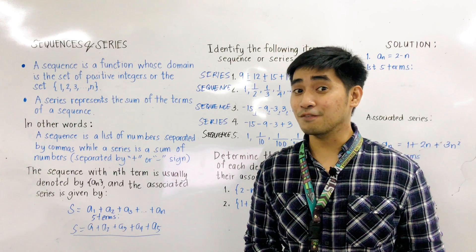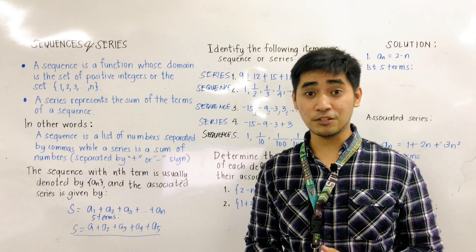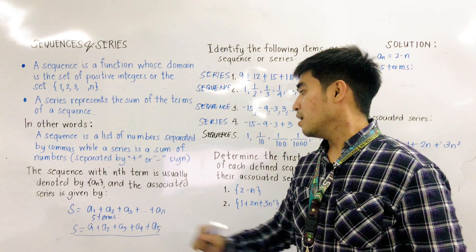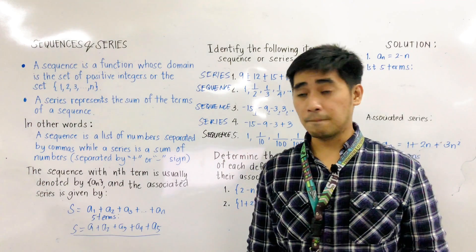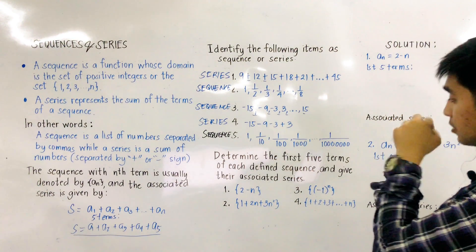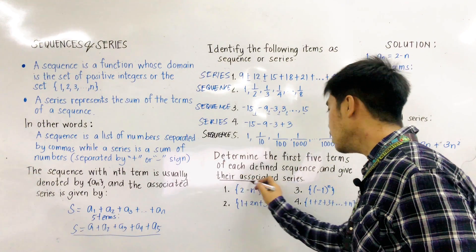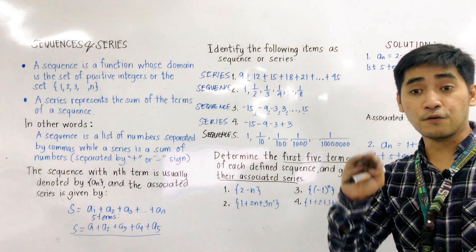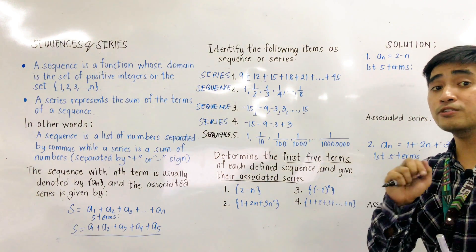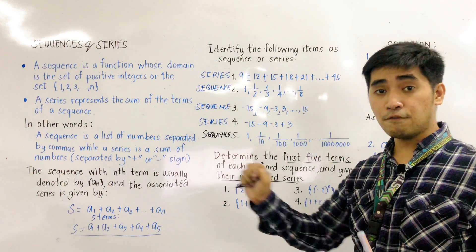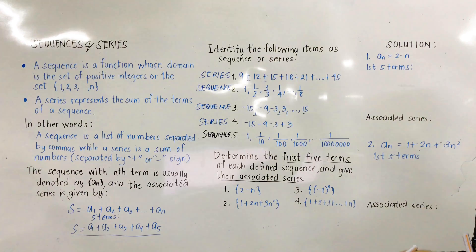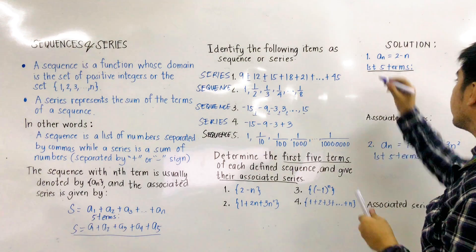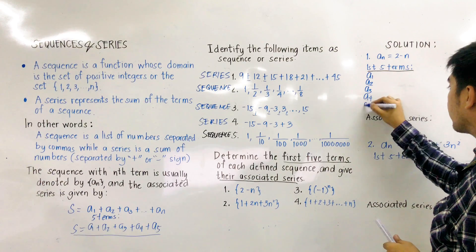What if we're asked to get the values of each term using sequences and series? We need to determine the first five terms of each defined sequence and give their associated series. So we'll be finding A1, A2, A3, A4, and A5. For number 1, we have A-N = 2 - N. We will substitute the values N = 1, 2, 3, 4, 5 into the formula.